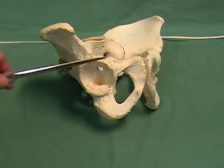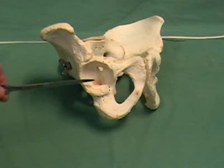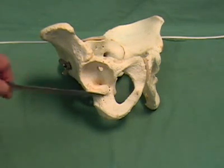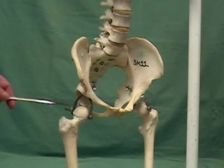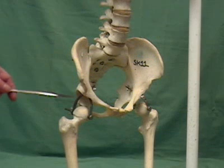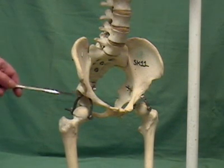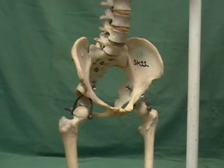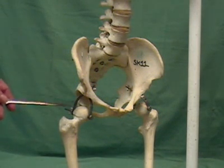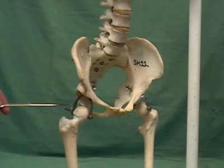The fossa seen here is referred to as the acetabulum. It is the site where the head of the femur articulates with the pelvic bone. The hip joint is a typical ball and socket joint where the head of the femur articulates with the acetabulum of the pelvic bones. This joint is considerably more stable than that of the shoulder joint, especially since the lower limbs have to support the weight of the body.